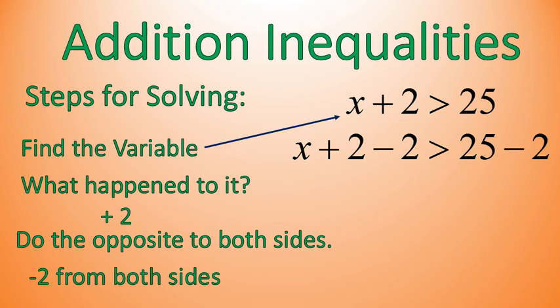So you'll end up with something that looks like this. X plus 2 minus 2 is greater than 25 minus 2. Notice on both sides of the inequality, we have just subtracted 2. Now we're going to solve 25 minus 2 is 23, and X plus 2 minus 2, those two will cancel each other out, basically. Plus 2 minus 2 equals 0. So you'll just end up with X on the left side of the inequality and 23. X is greater than 23.